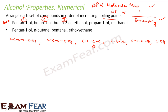After butane, we look at propanol — that is fourth. Then one carbon less is ethanol — fifth. And methanol has the least boiling point — sixth. So the order is: pentanol > butane-1-ol > butane-2-ol > propanol > ethanol > methanol.